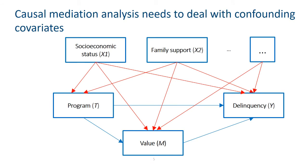In practical research, especially in observational studies, you cannot randomly assign subjects to different treatment conditions. For example, teenagers participate in the youth program by their own choice. Even if you can randomly assign subjects to treatment conditions, random assignment to mediator conditions is usually not plausible. Because of the lack of random assignments, some background pre-treatment characteristics of the subjects might have confounded the observed effects. These background pre-treatment characteristics are also called confounding covariates, because they induce extraneous associations among the treatment, mediator, and outcome variables by acting as common causes, as represented by the red arrows in the causal diagram. Therefore, causal mediation analysis must also deal with these confounding associations in order to get unbiased estimation of the causal treatment and mediation effects.